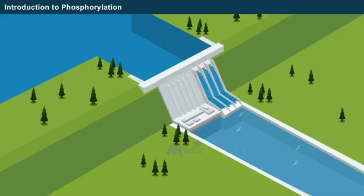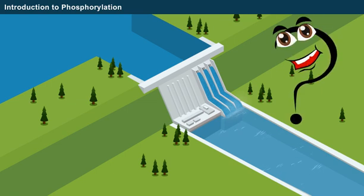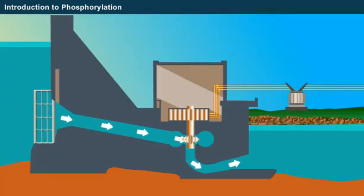The process of phosphorylation can be easily understood by comparing it with the mechanism of hydroelectric power generation. When a large amount of water stored in the reservoir is released through the gate, the water reaches the turbine with great force. The turbine uses the force to convert mechanical energy into electrical energy.